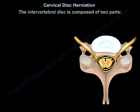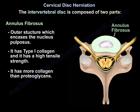It is composed of two parts: the annulus fibrosus, the outer structure which encases the nucleus pulposus. It has type 1 collagen and it has a high tensile strength. It has more collagen than proteoglycan.